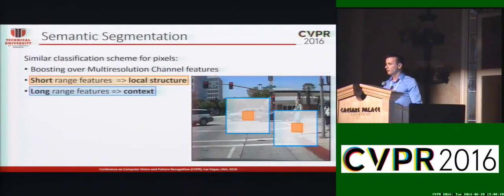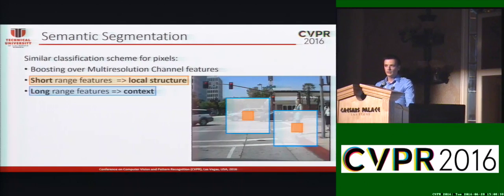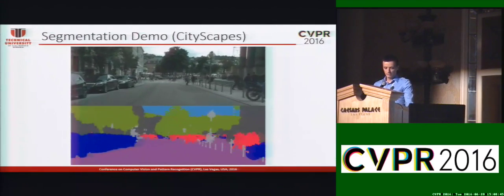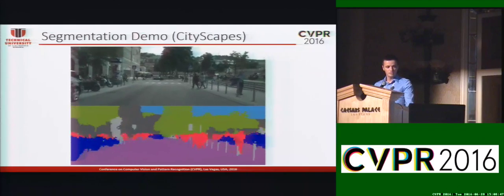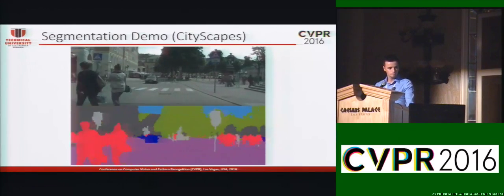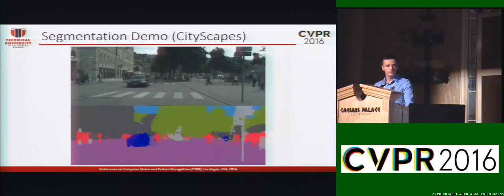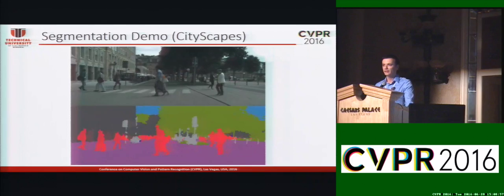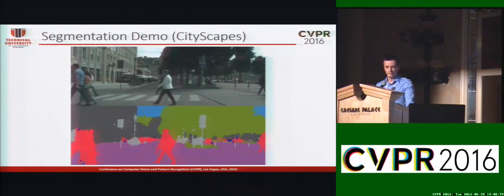Boosting of multi-resolution filter channels can be used also for classifying pixels into semantic classes. We use short-range features to capture the local structure and long-range features to capture the context of pixels. Here you can see some examples for semantic segmentation on a demo sequence from the Cityscapes dataset. We trained an individual classifier for each semantic class, and the final segmentation is refined using a conditional random field.